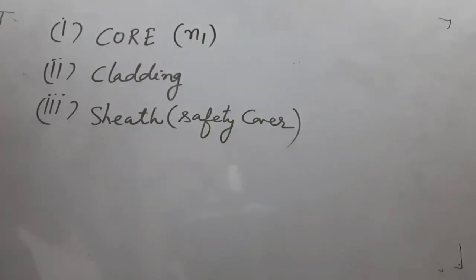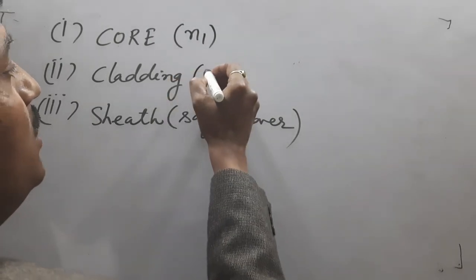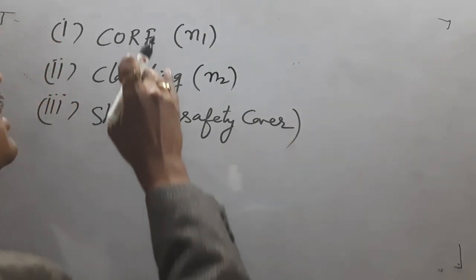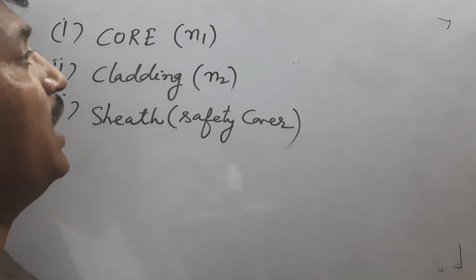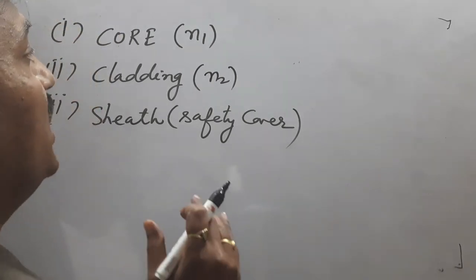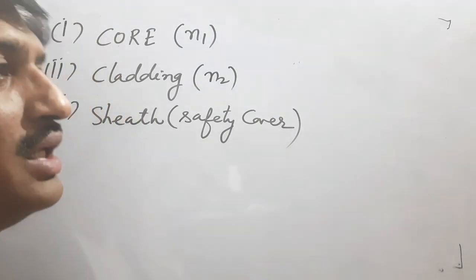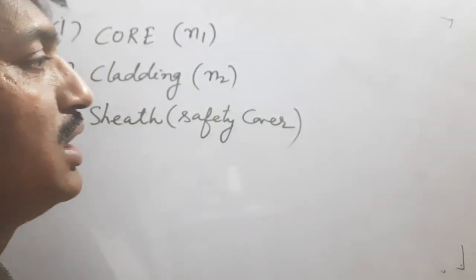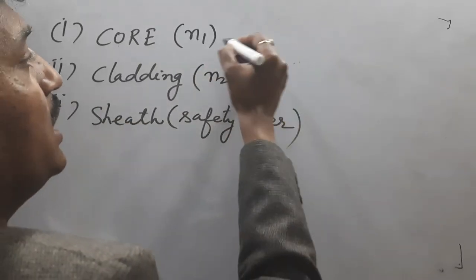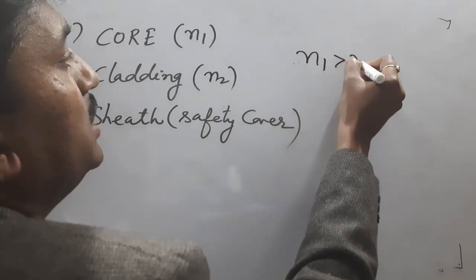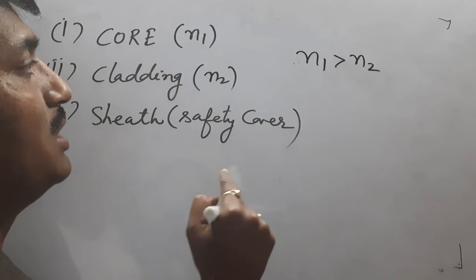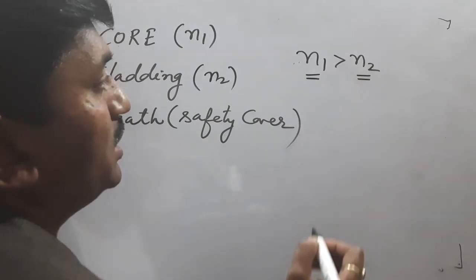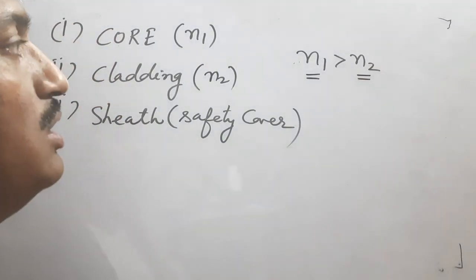The effective refractive index of core material we take as n1, and the effective refractive index of cladding material we take as n2. The sheet is only a safety cover to protect the core and cladding. To follow the principle of total internal reflection, the effective index of core material n1 should be greater than the effective index of cladding material n2.